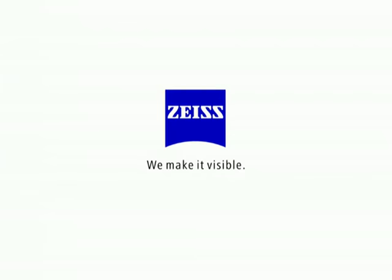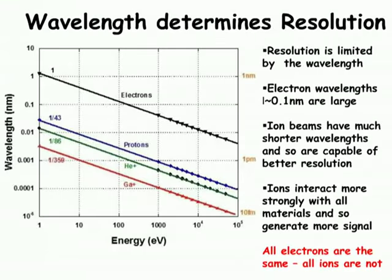Good morning and good afternoon, everyone. My task is to fill in more background detail. Why are we interested in using ions and what makes them better than electrons? If you look at the graph plotting the wavelength of electrons and various kinds of ions: the resolution of any microscope — the smallest thing you can expect to see — is of the order of magnitude of the wavelength of the radiation it's using. The electron beam wavelength is typically a hundred times greater than the wavelength of any ion beam of interest, which should enable substantially better spatial resolution.